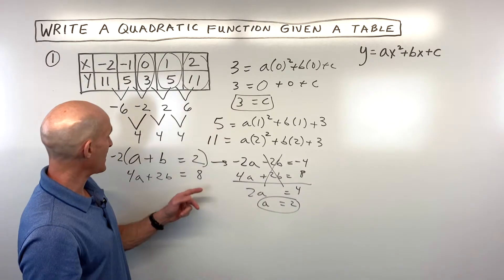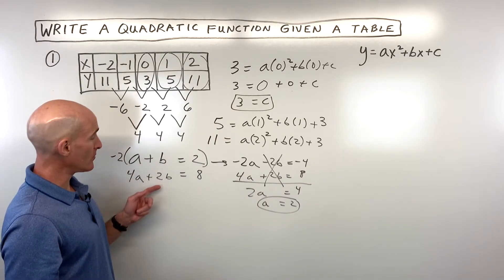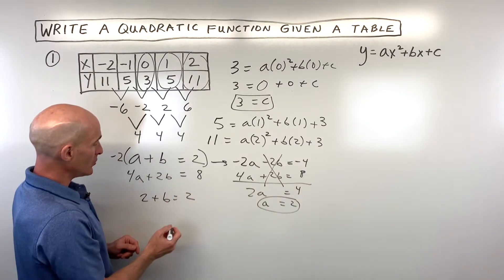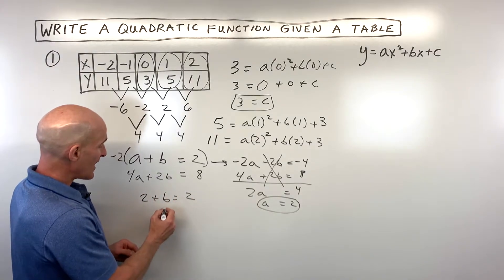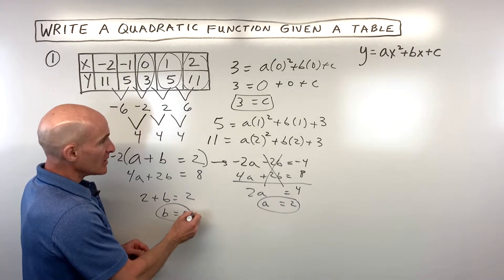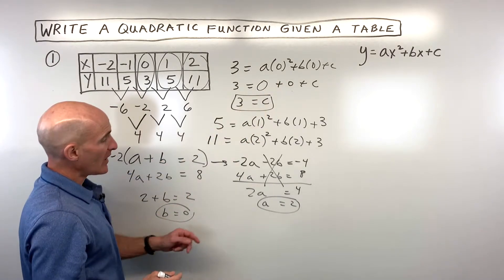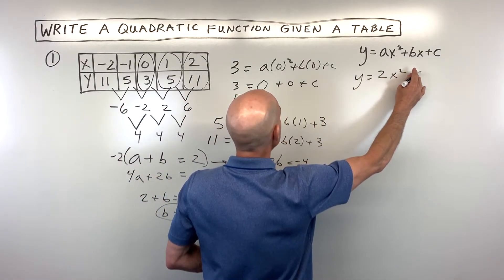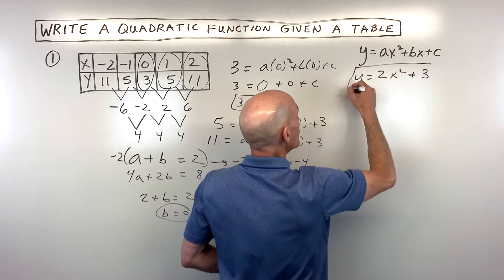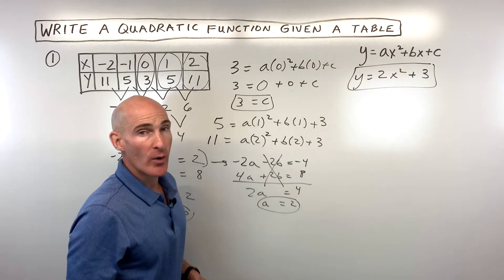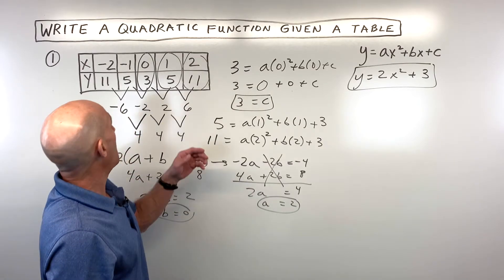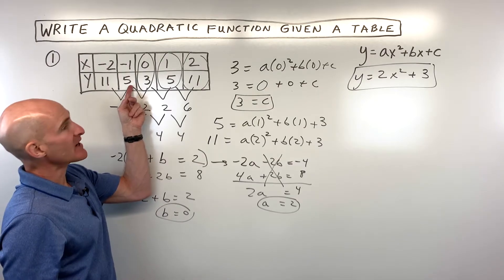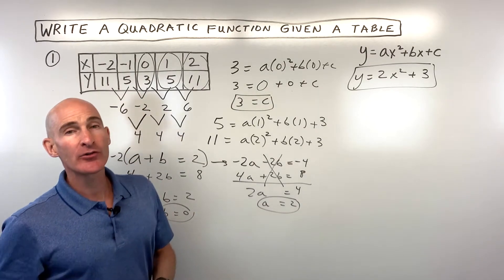Now plug a equals 2 back into one of the two-variable equations: 2 plus b equals 2, so b equals 0. Putting it all together, y equals 2x squared plus 0x plus 3, which gives us our quadratic equation. Let's check: when x is negative 1, does y equal 5? Yes it does, so we're good.